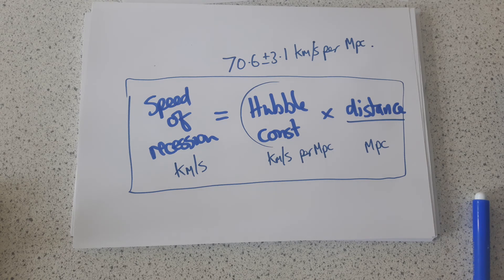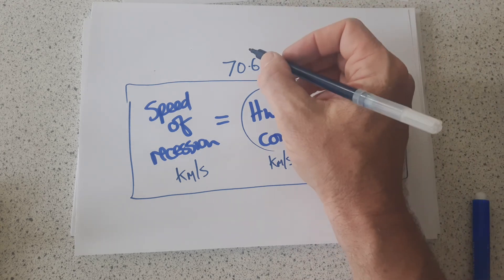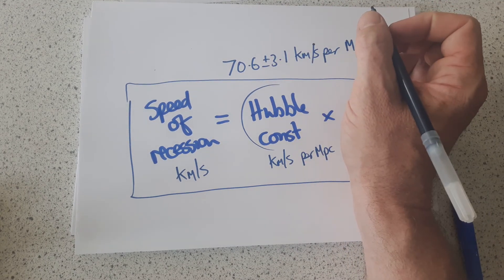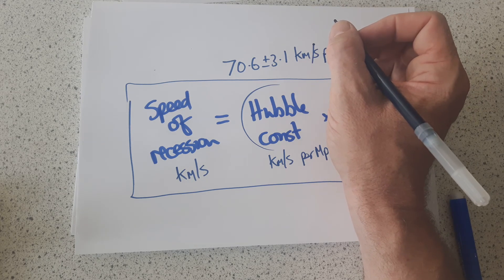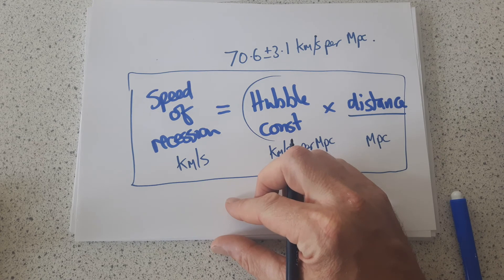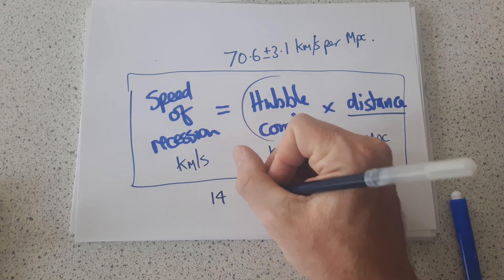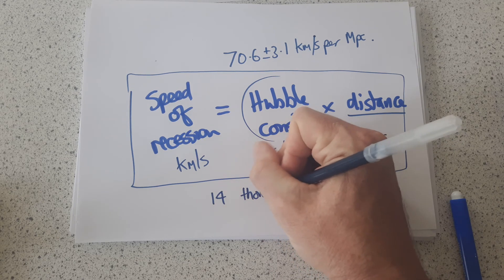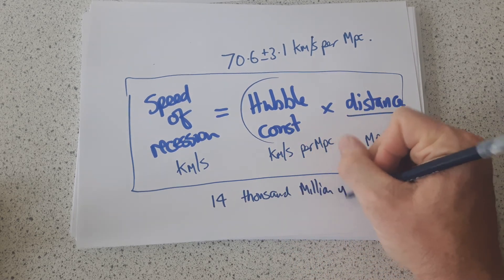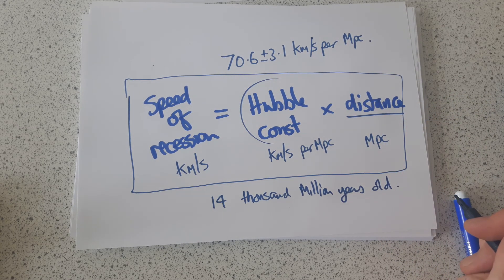The other important thing about the Hubble constant is that 1 over the Hubble constant has units of time, and therefore 1 over the Hubble constant gives us the age of the universe. This was our first idea that the universe was about 14,000 million years old, because that's what 1 over the Hubble constant gives us.